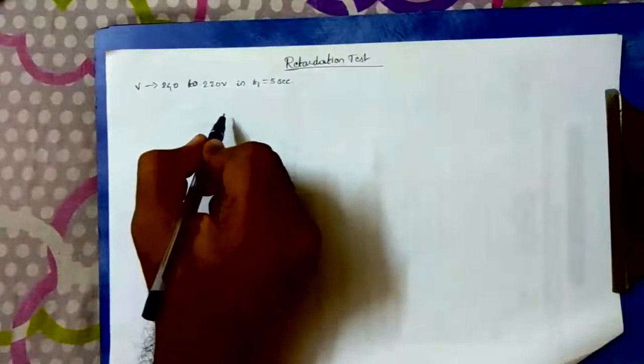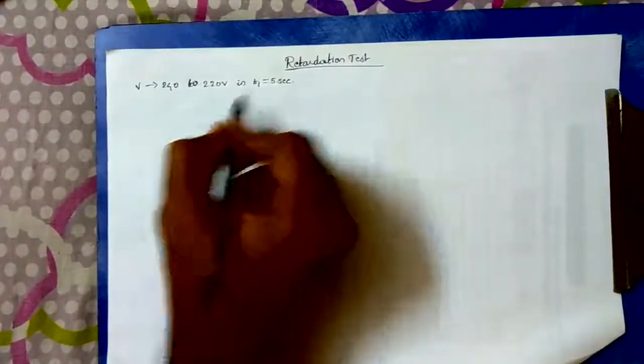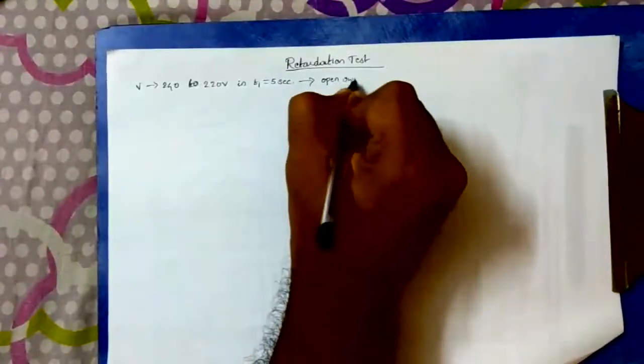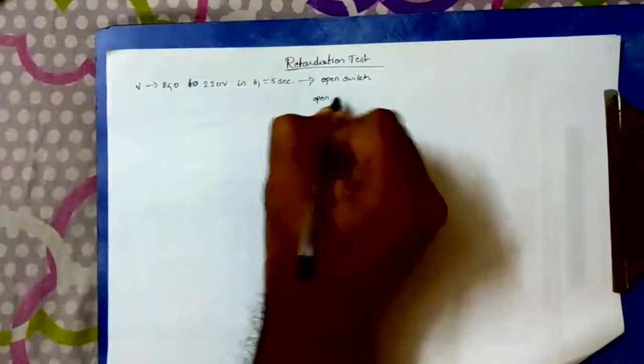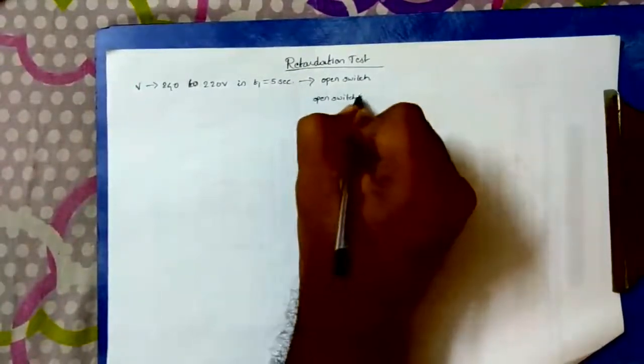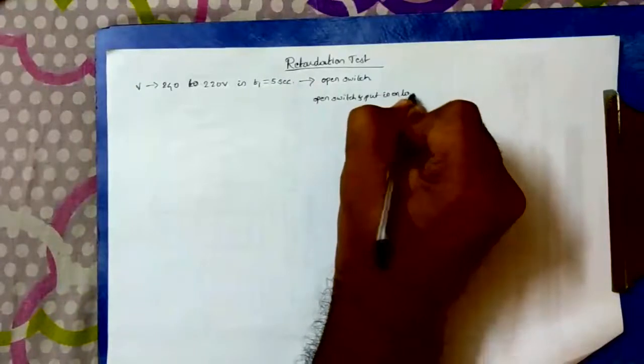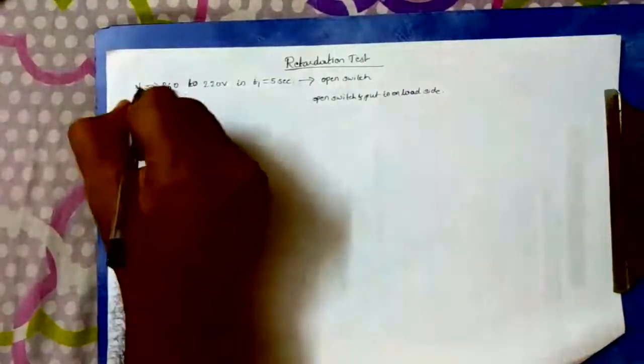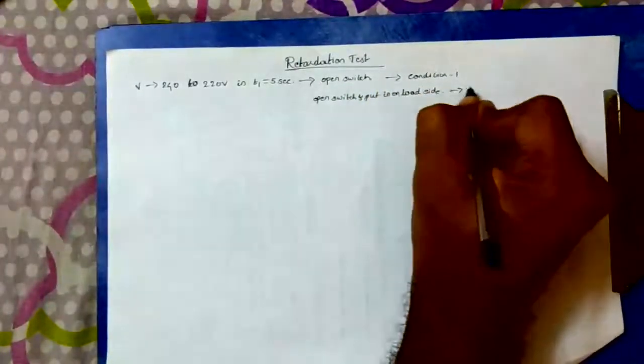The armature circuit on opening the armature circuit, and in 6 seconds on suddenly changing the armature connection from supply to a load. This is the condition when we just open the switch. Second condition is that we will open the switch and put it on load side.